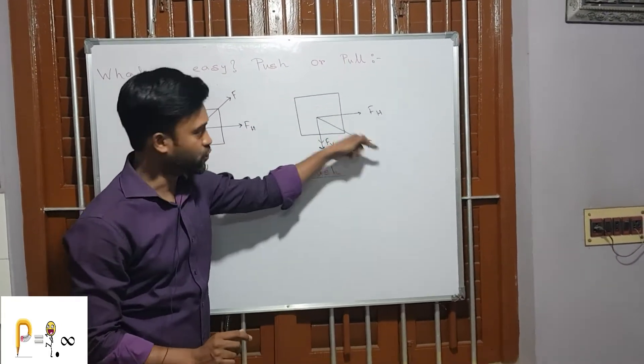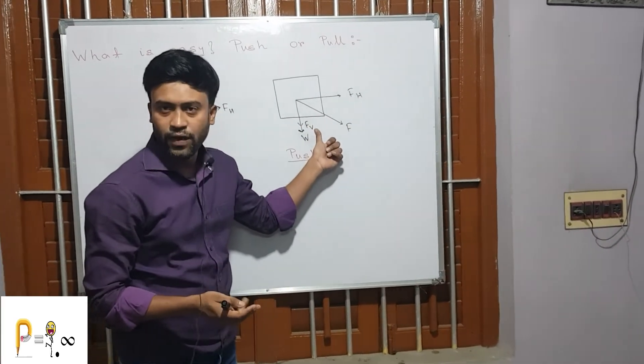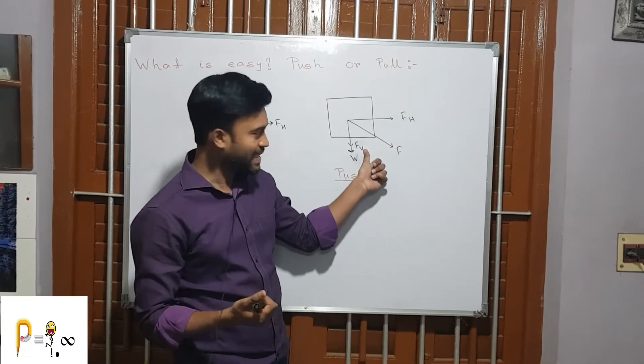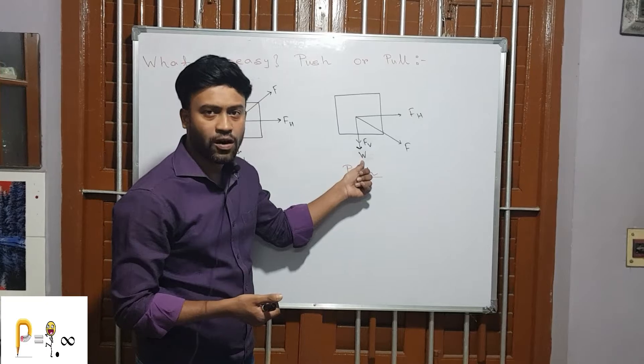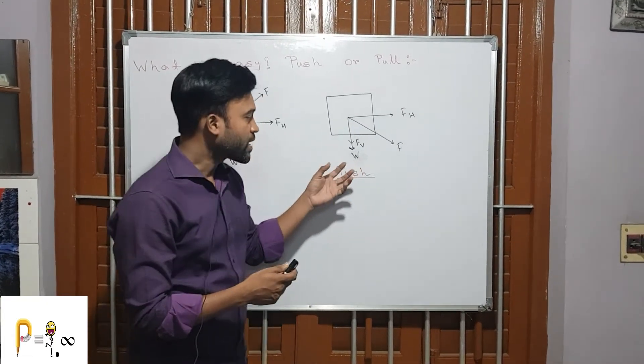Similarly, this is the horizontal and this is the vertical component. Now in case of the vertical component, you can see it is in the same direction of weight. This will result in increasing the weight since it is acting in the same direction.